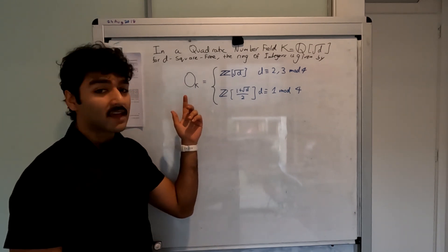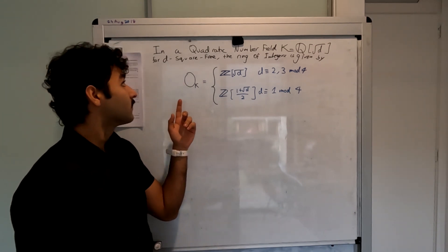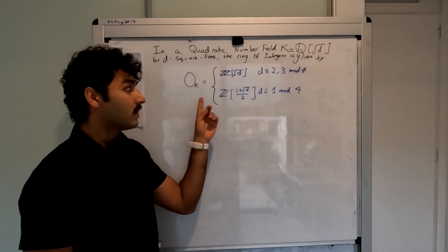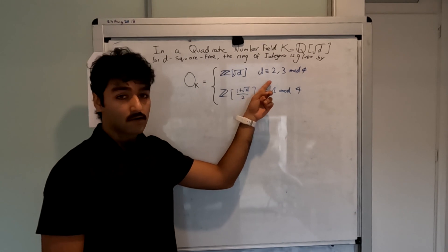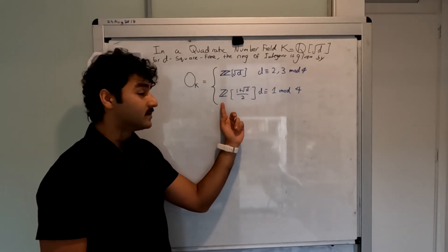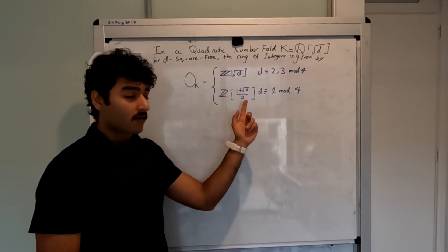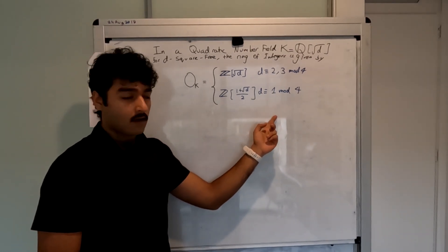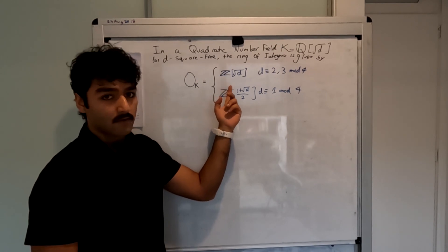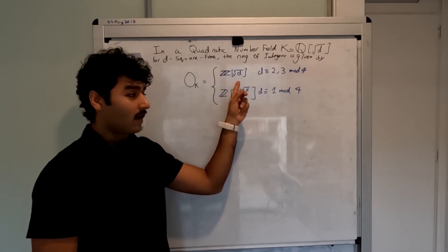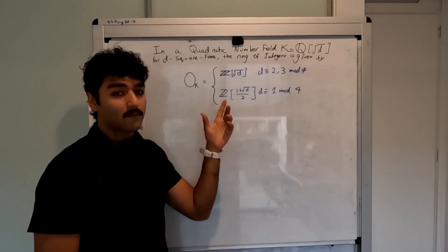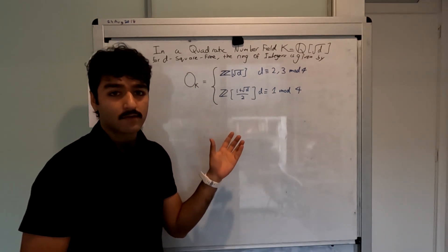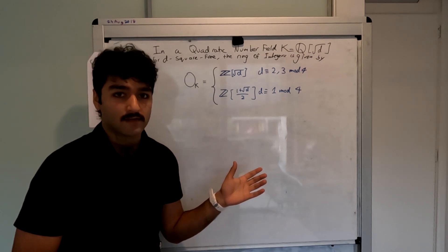We find the ring of integers in this number field by the following theorem. In a quadratic number field k equals Q(√d) for d square-free, the ring of integers is given by O_k equals Z[√d] if d is congruent to 2 or 3 mod 4, and Z[½(1 + √d)] when d is congruent to 1 mod 4. We call a Z-module of this form, where we're adjoining a single element, monogenic. So in any case, any quadratic number field has a monogenic ring of integers.